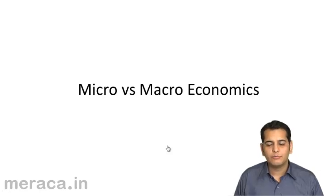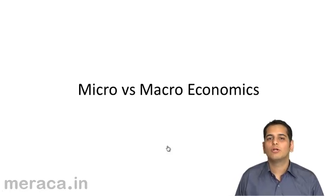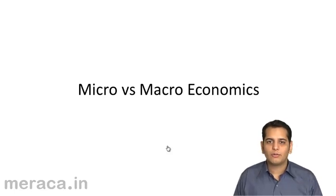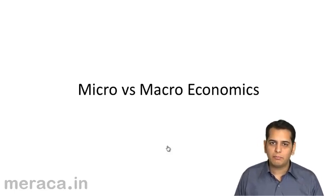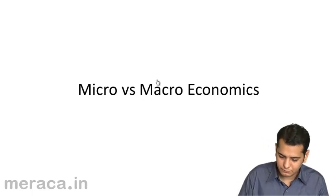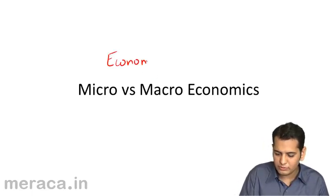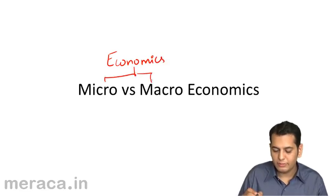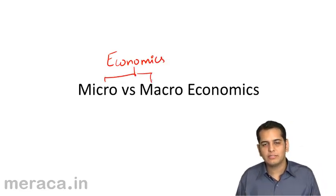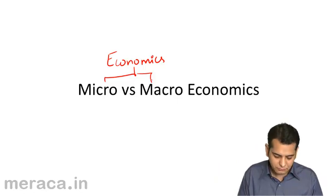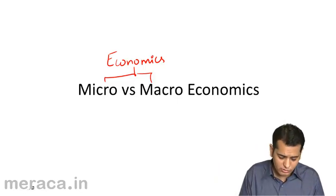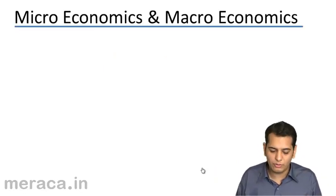In our last session, we learned what economics is. Now let's see what macroeconomics and microeconomics are. Economics is divided into two parts: microeconomics and macroeconomics.